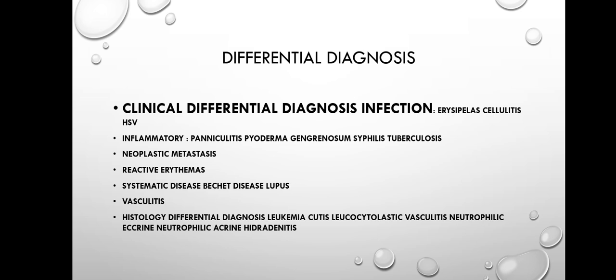Differential diagnosis: the clinical differential includes erysipelas, cellulitis, and herpes simplex infection. The inflammatory category includes panniculitis, pyoderma gangrenosum, syphilis, and tuberculosis. Other differentials include neoplastic metastasis, reactive arthritis, systemic diseases such as Behçet's disease, lupus, and vasculitis. Histological differentials include leukemia cutis, leukocytoclastic vasculitis, and neutrophilic eccrine hidradenitis.